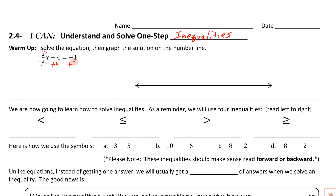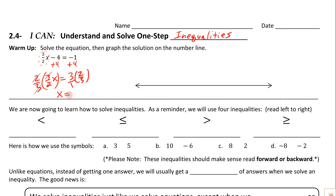We're going to get rid of the 4 by adding 4. So we get 3/2 x on this side, and over on this side we've got negative 1 plus 4, which is going to be positive 3. We've got a fraction in front of the variable, so we're going to multiply by the reciprocal. The reciprocal of 3/2 is 2/3, so we're going to multiply both sides by 2/3.